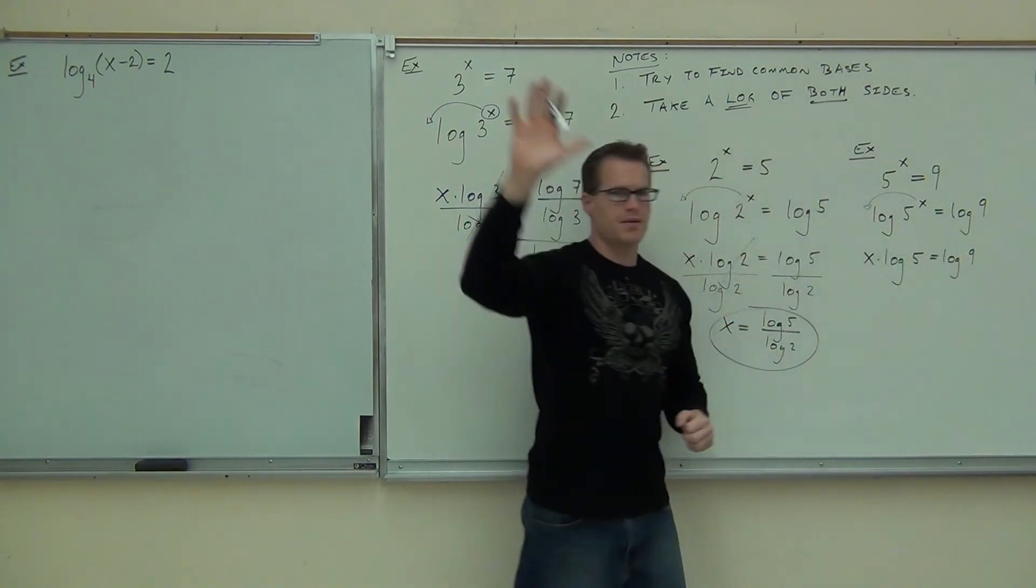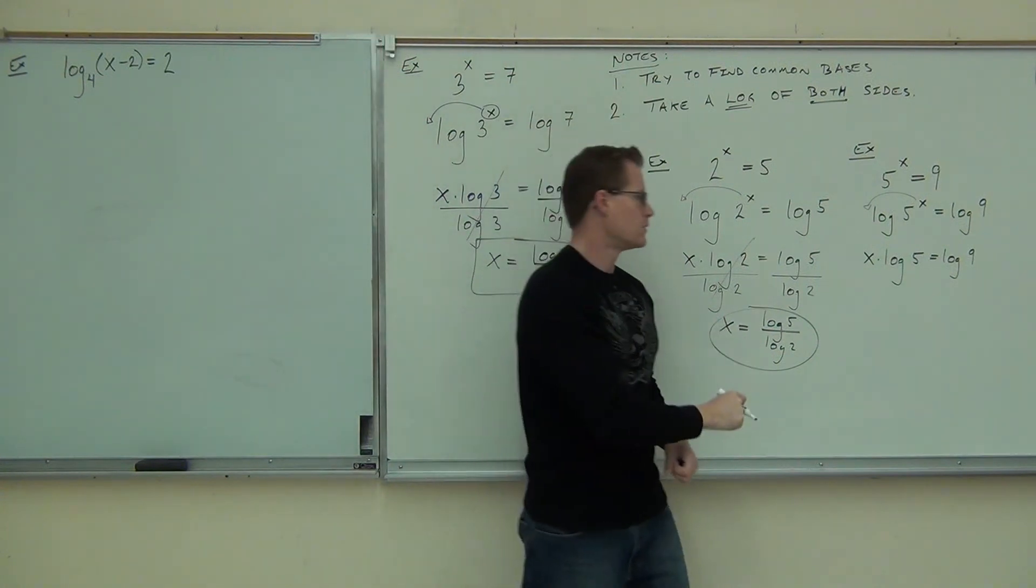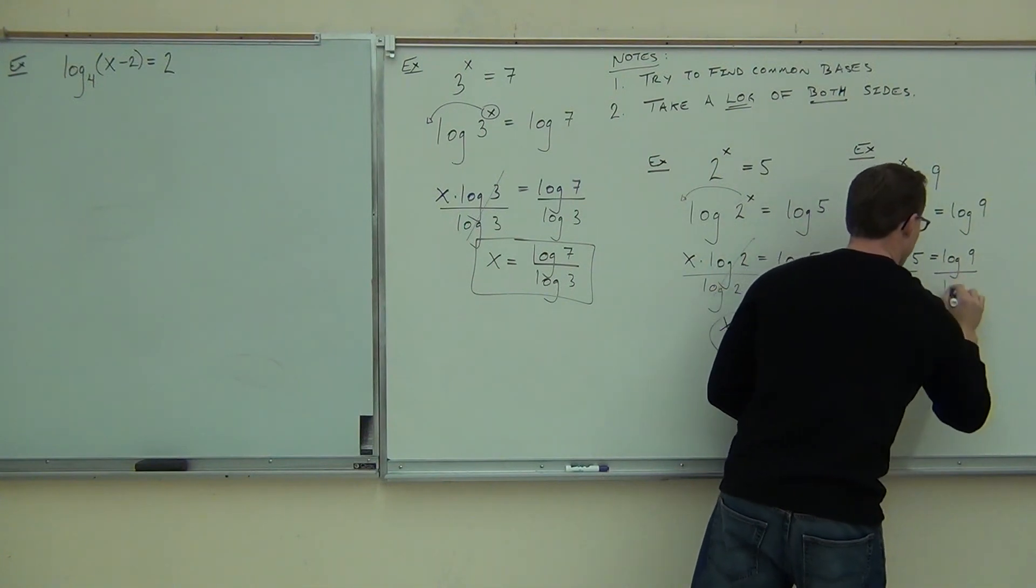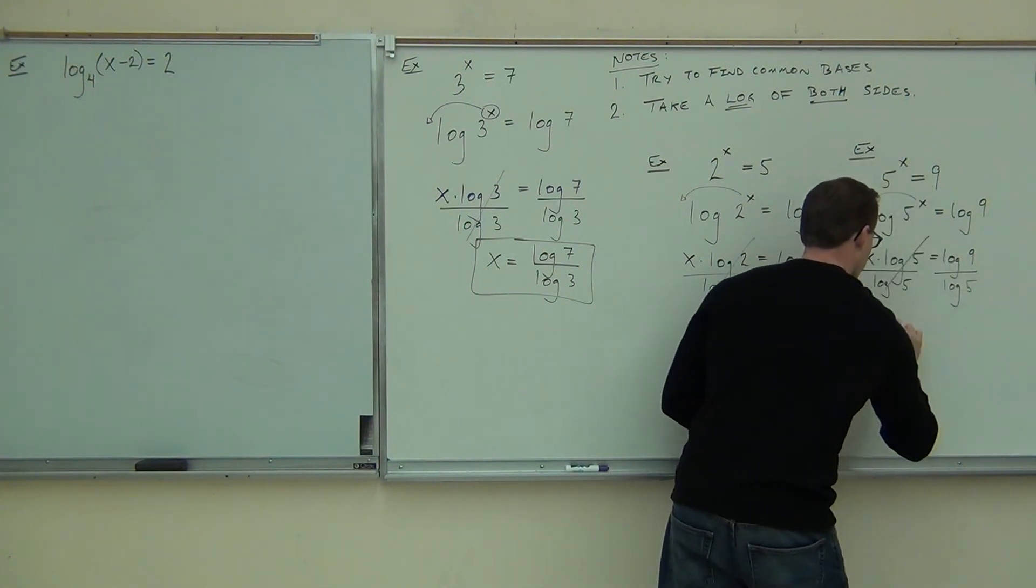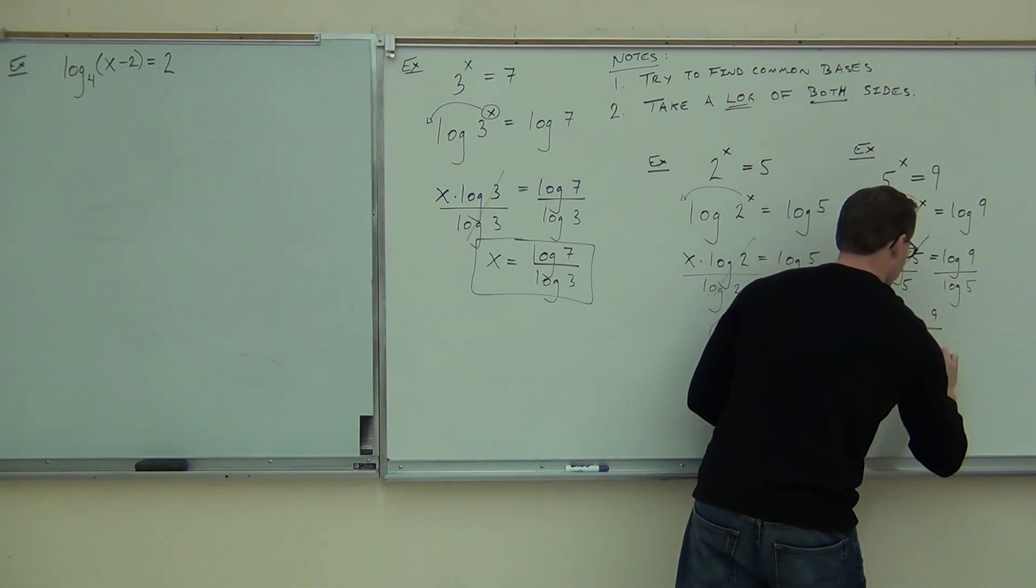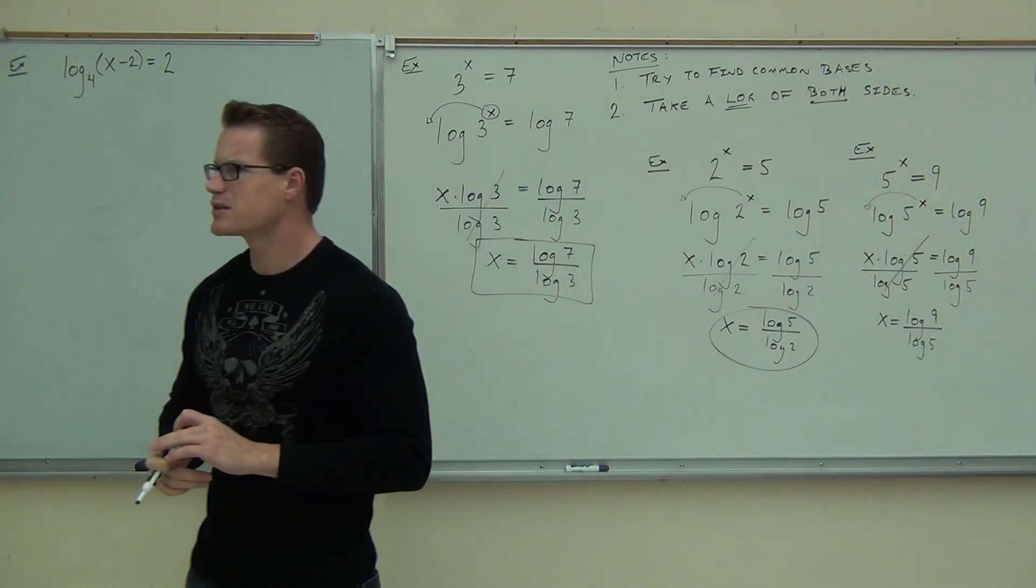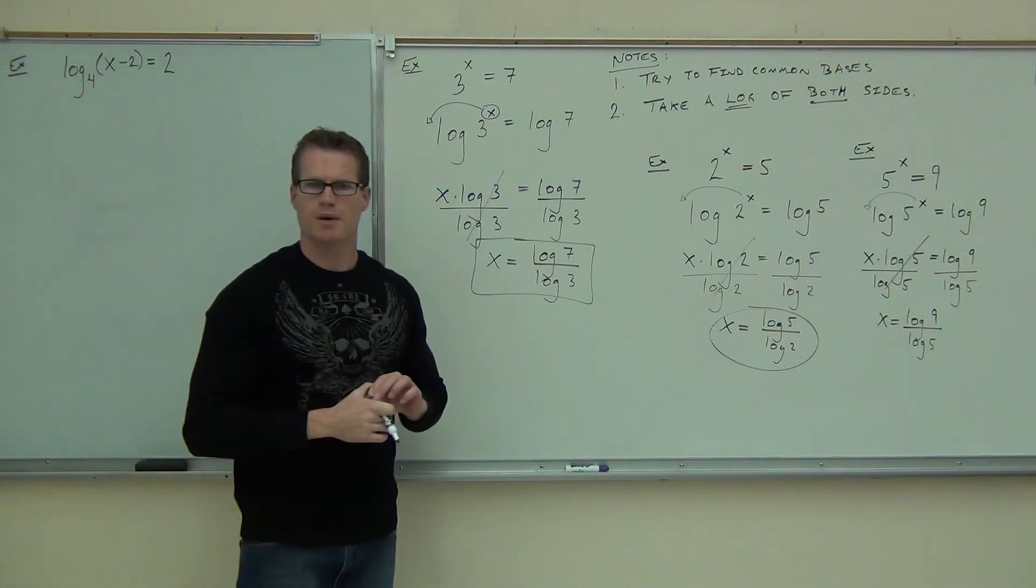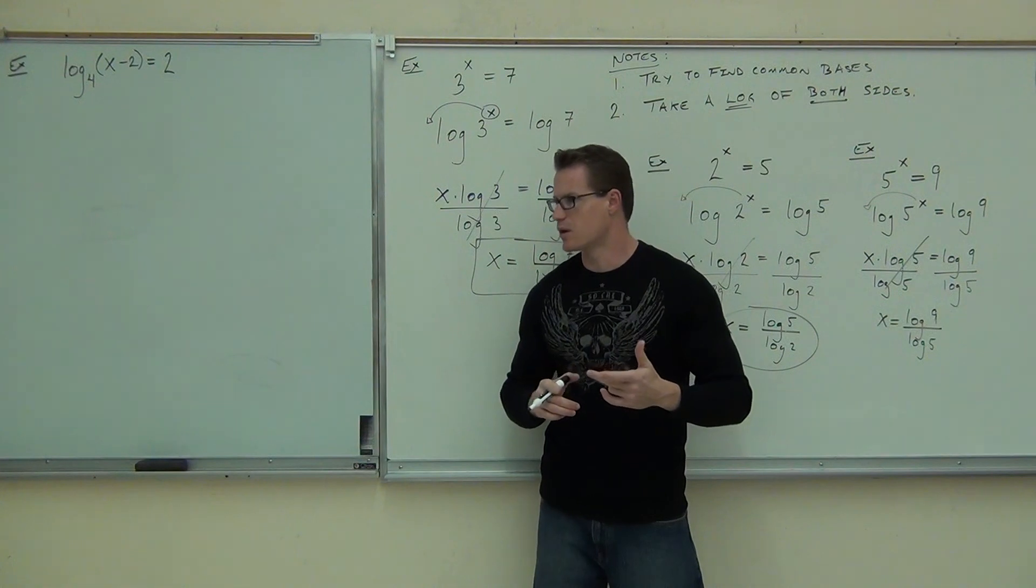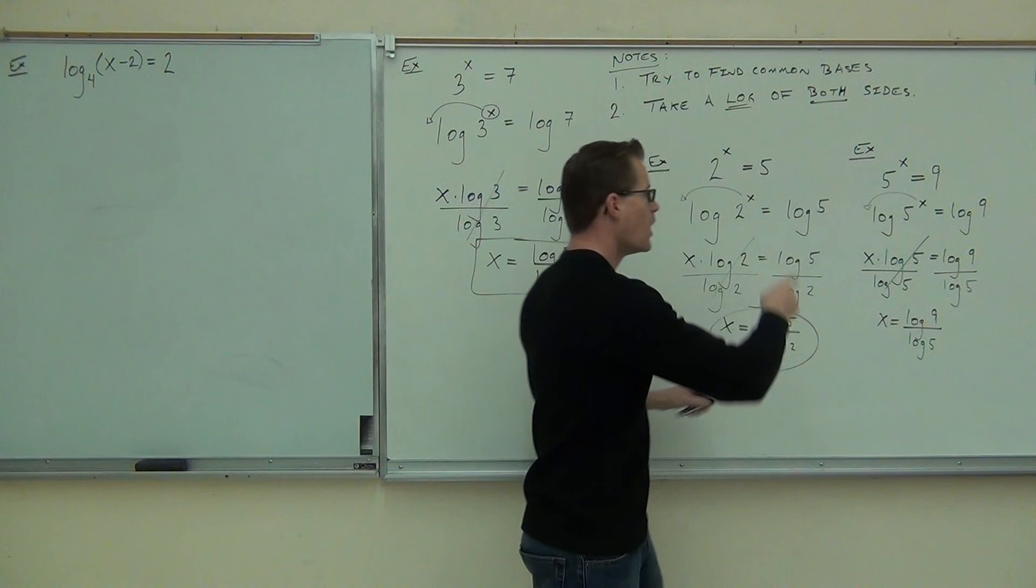Show of hands, how many people made it that far in the first two steps? Good deal. Last step, what are you going to do? Divide by what? Log of 9 over log of 5. What's our base again, by the way? 10. So we're talking about base 10 logs. You can choose any log you want. People usually choose a base 10, a common log for that. Now, one question, can I change the problem just a little bit? Would you still be able to do it? So up here at the top, let's not just have 5 to the x. Let's have 5 to the x minus 1. Let's go through the process again.